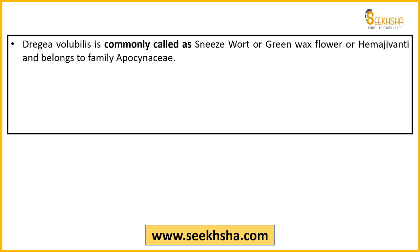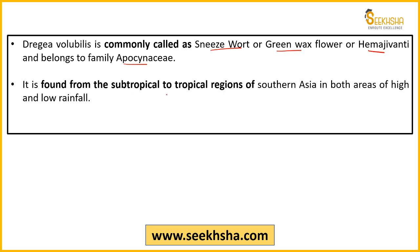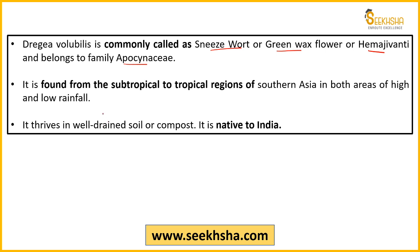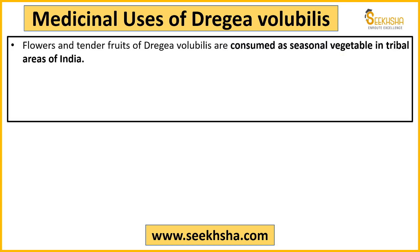Dregea volubilis is a fairly important topic that was in the magazine. It is commonly called sneeze wort, green wax flower, or Hemaj. It belongs to the Apocynaceae family. It is found in southern Asia, in tropical regions with both high and low rainfall, in well-drained soils. It is native to India and is considered medicinally very valuable.